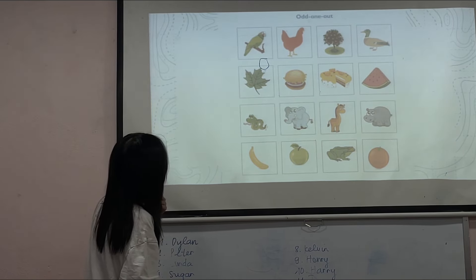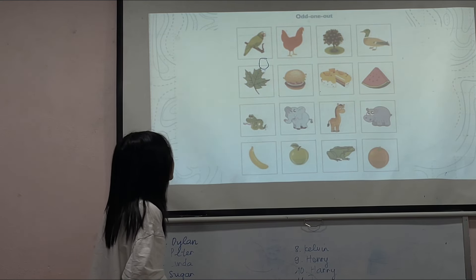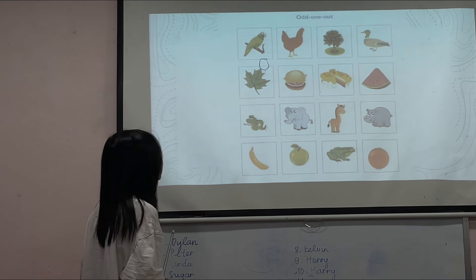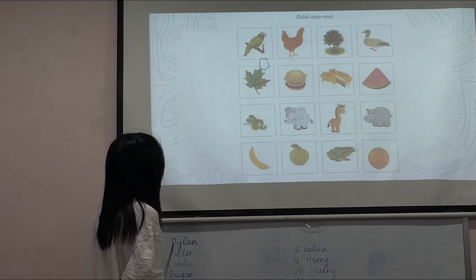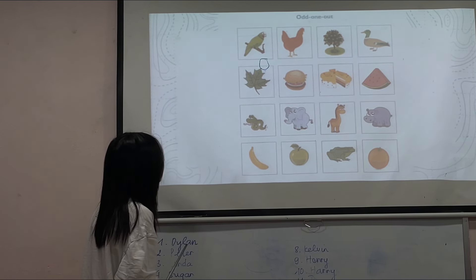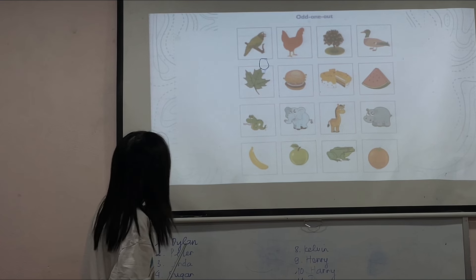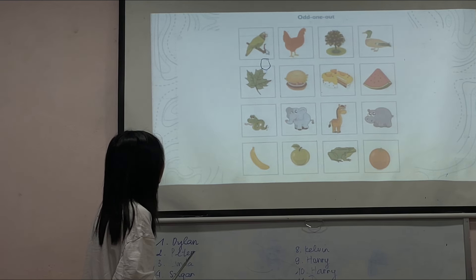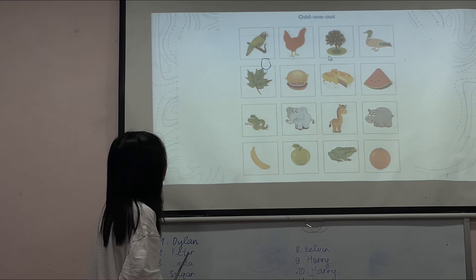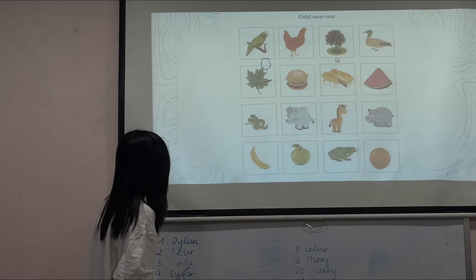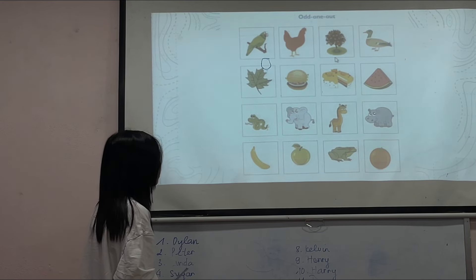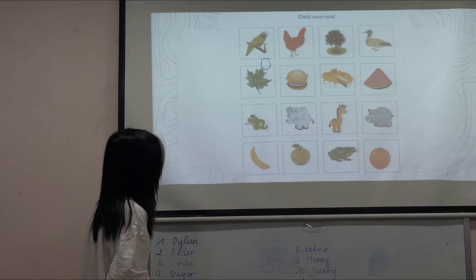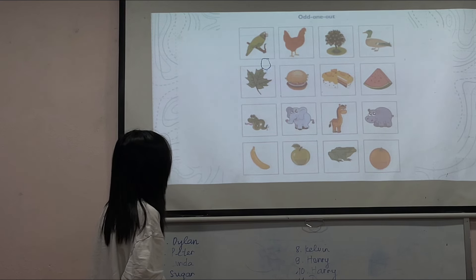Picture three is the odd one out because pictures one, two, and four are animals. In picture three, it is trees.